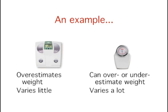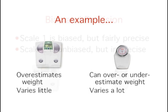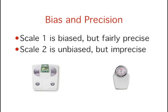Which scale do you think is biased? Which do you think is most precise? Scale 1 is biased because it systematically overestimates your actual weight. On average, its measurements are a little higher than your actual weight. But scale 1 is fairly precise because all the weights it reports are similar.